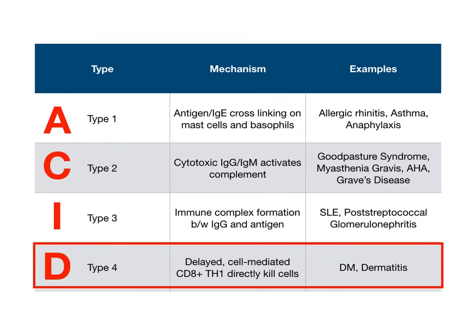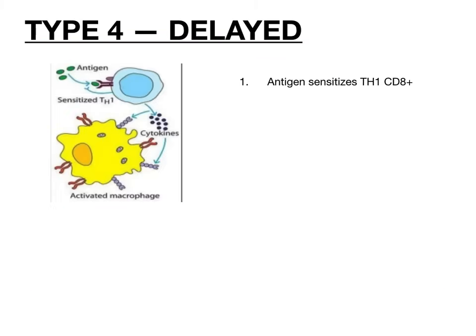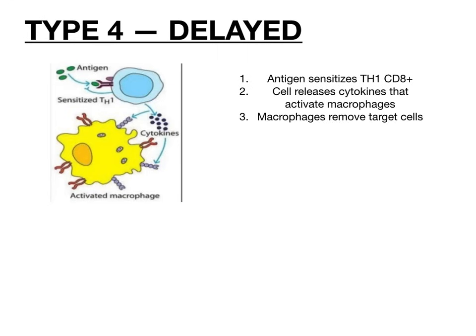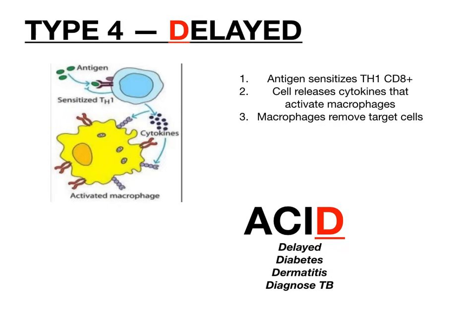We're going to end with type 4 hypersensitivity. Type 4 corresponds to the D in our ACID mnemonic. What does the D stand for? Delayed. What's happening here is that an antigen sensitizes a Th1 CD8-plus cell, and that cell releases cytokines that activate macrophages. Those macrophages directly remove target cells — they phagocytize and kill the cell. This is delayed because it takes time to occur. The antigen first has to sensitize your cell, and then later, on a kind of repeat insult, the cell releases substances that activate macrophages. So D for delayed — it doesn't happen immediately.